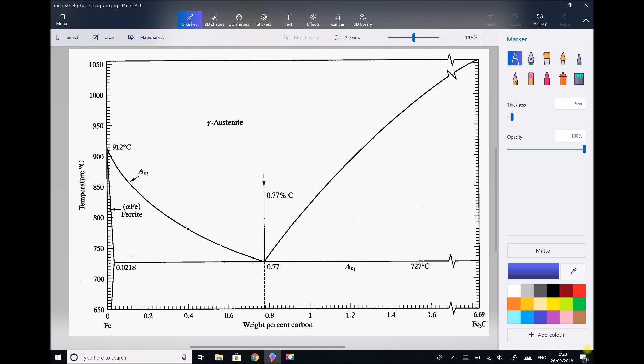We've already mentioned that austenite or gamma steel is face-centered cubic, and ferrite or alpha iron is body-centered cubic. We have this very narrow band on the left hand side which represents ferrite with a small amount of iron carbide dissolved or Fe3C. That Fe3C is also known as cementite. On the left hand side we have BCC iron with a small amount of cementite dissolved.